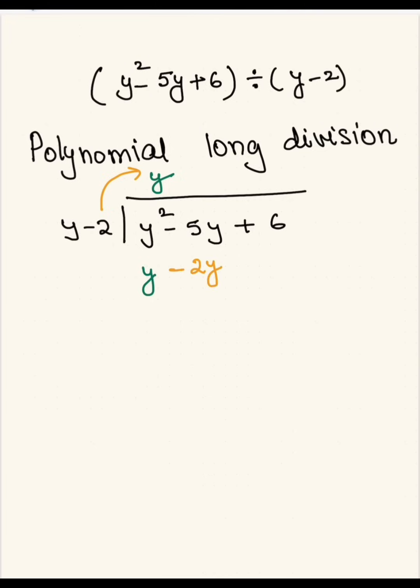And then you will go ahead and multiply negative 2 with y, which will give you negative 2y.